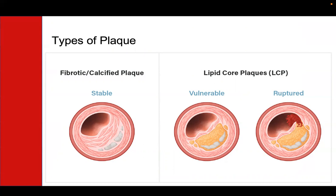This is what happens in heart attacks and strokes. Plaque that has a thin covering or cap and a lot of fat or lipid inside is the most vulnerable to rupturing. We call this soft plaque, and it's the most dangerous kind.